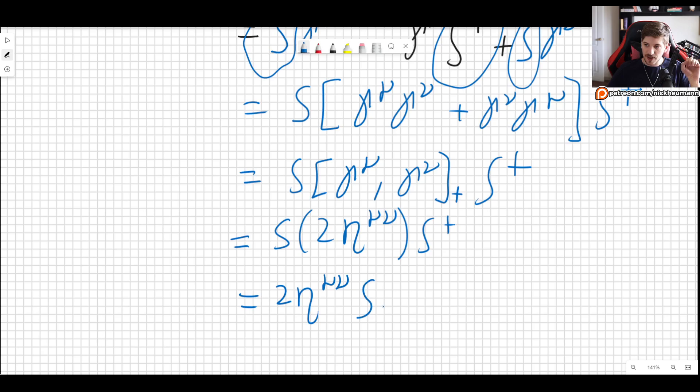So we get two eta mu nu. And then we have S S dagger, which is one. So two eta mu nu is what the anticommutator of gamma mu prime, gamma nu prime is.